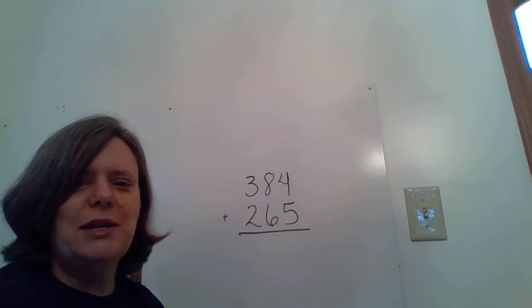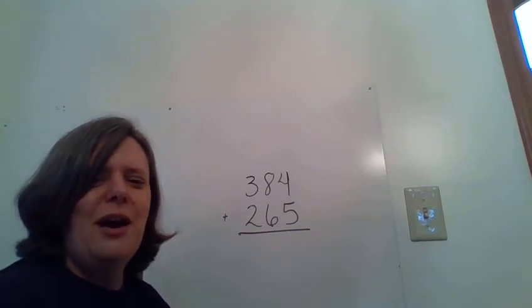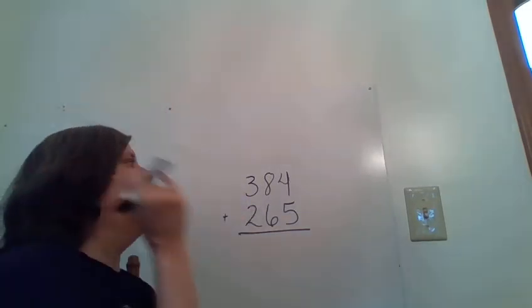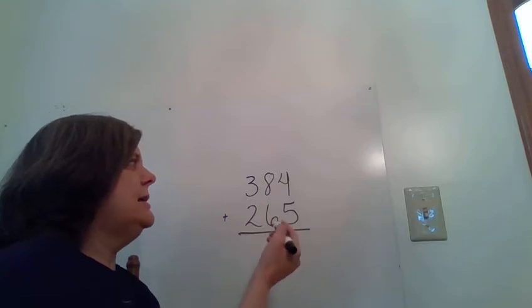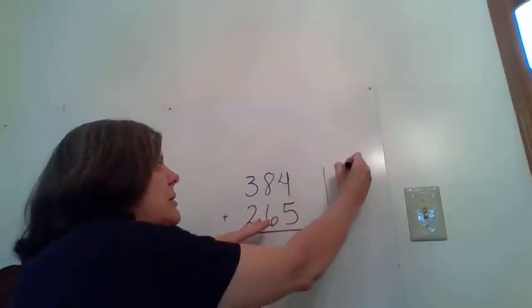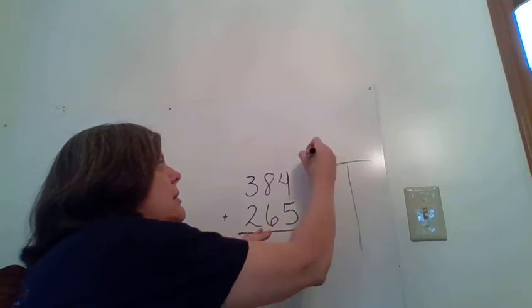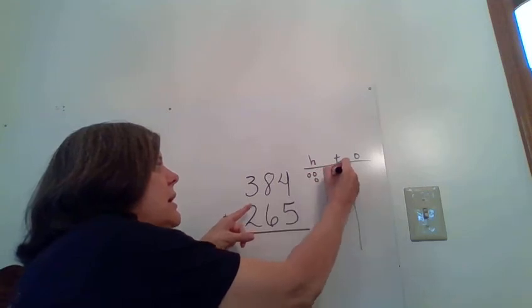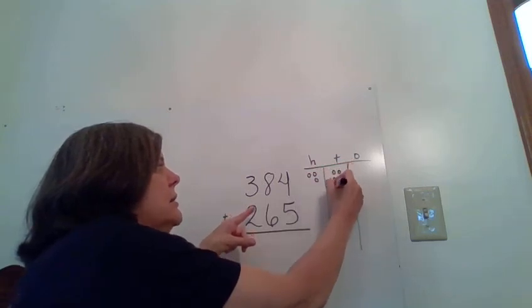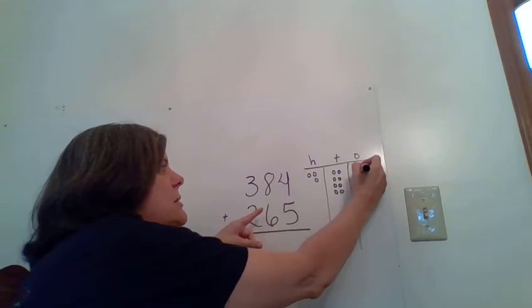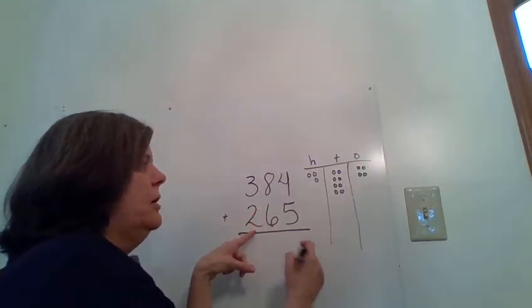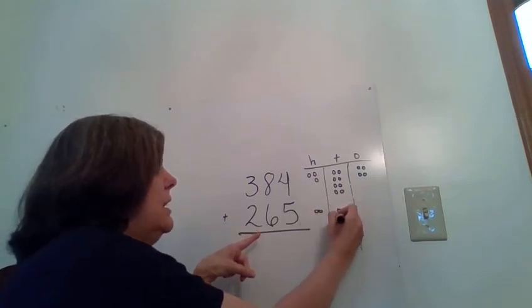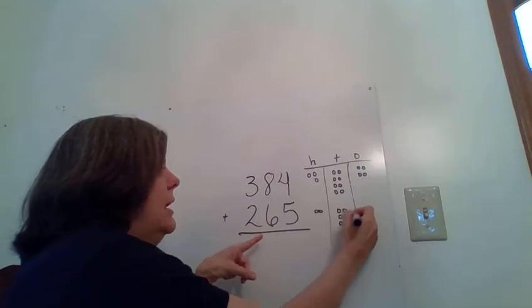Alright, so I hope you have solved this problem on your own, and now we'll be looking at it together. We are starting out with our hundreds, tens, and ones. We've got three hundreds, eight tens, and four ones. And then we are going to be combining two hundreds, six tens, and five ones.